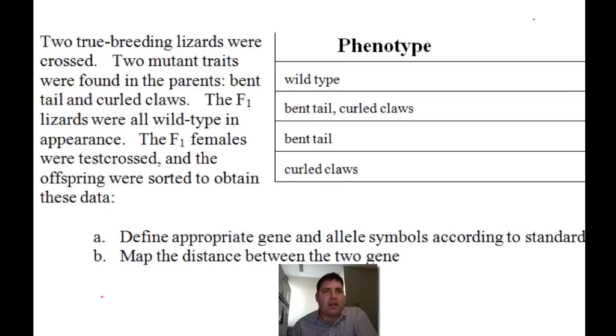So here we go, let's take a look at this. If we're dealing with two true breeding lizards, we know they're homozygous at both loci, and I'm throwing in two mutant traits which I've named bent tail and curled claws. You'll notice if we look in the phenotype table here, I'm not talking about what the wild type looks like, and that's not uncommon for this kind of a question.